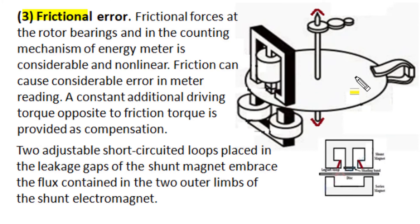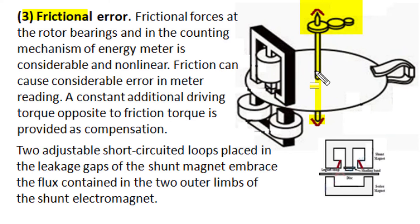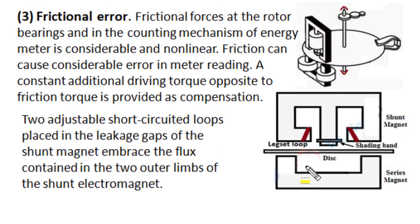Frictional forces at the jewel-pivot suspension of the spindle and in the counting and registering mechanism are not only considerable in magnitude, they are also non-linear. The magnitude of frictional forces becomes considerably higher for light load measurement when the driving torque is relatively small and the disk is rotating at a slower speed. Such non-linear and higher frictional forces can cause considerable error in energy meter measurement, especially at light load conditions. A constant additional driving torque opposite to frictional forces is provided to compensate for frictional error.